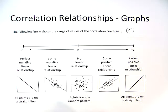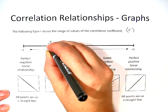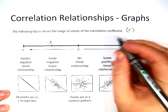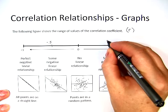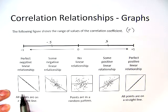You can see here, this is negative 0.5. This is positive 0.5. And here are the graphs.